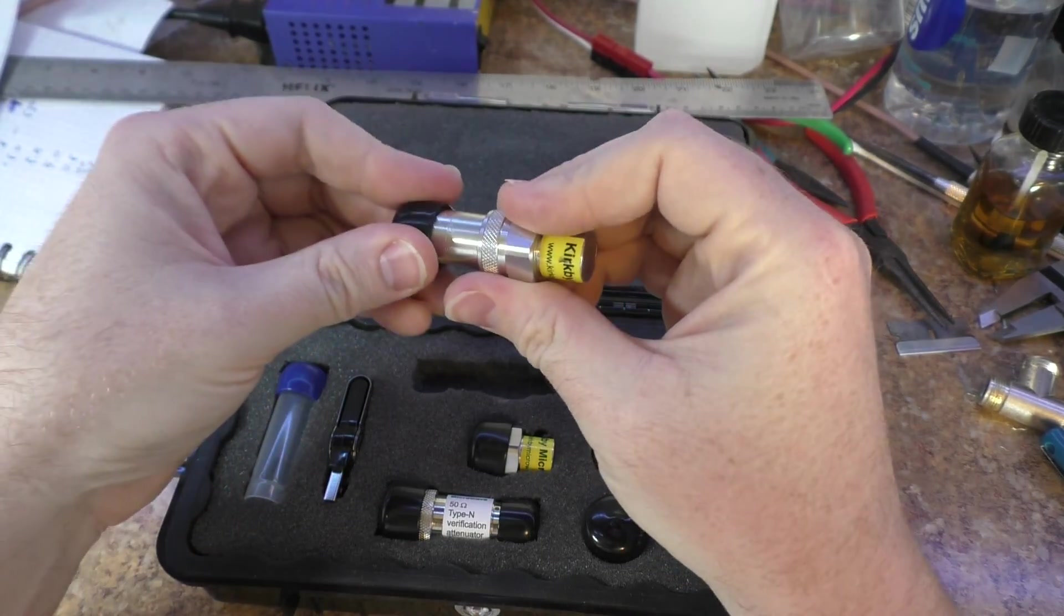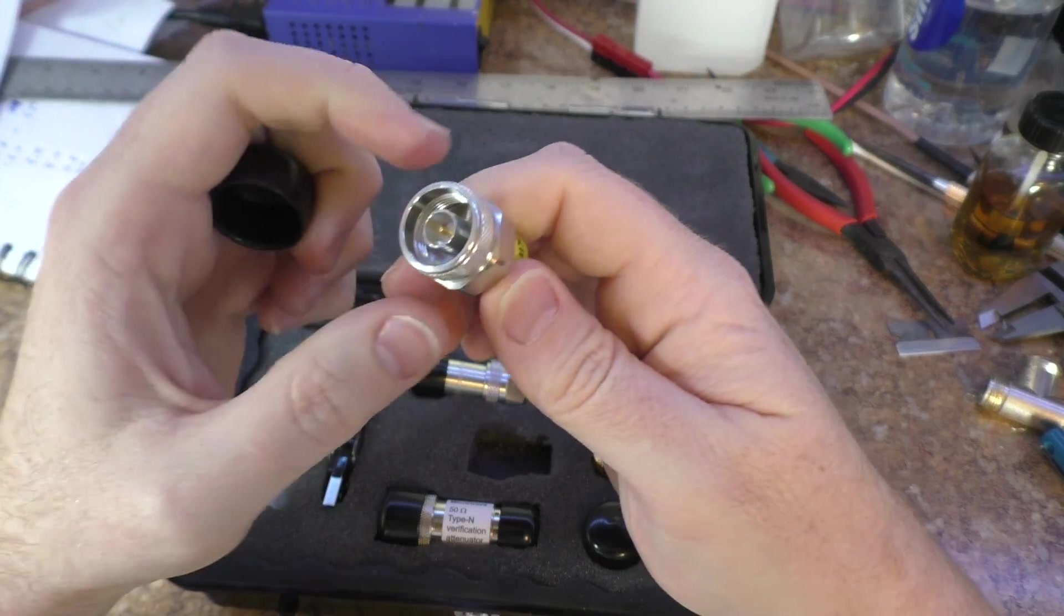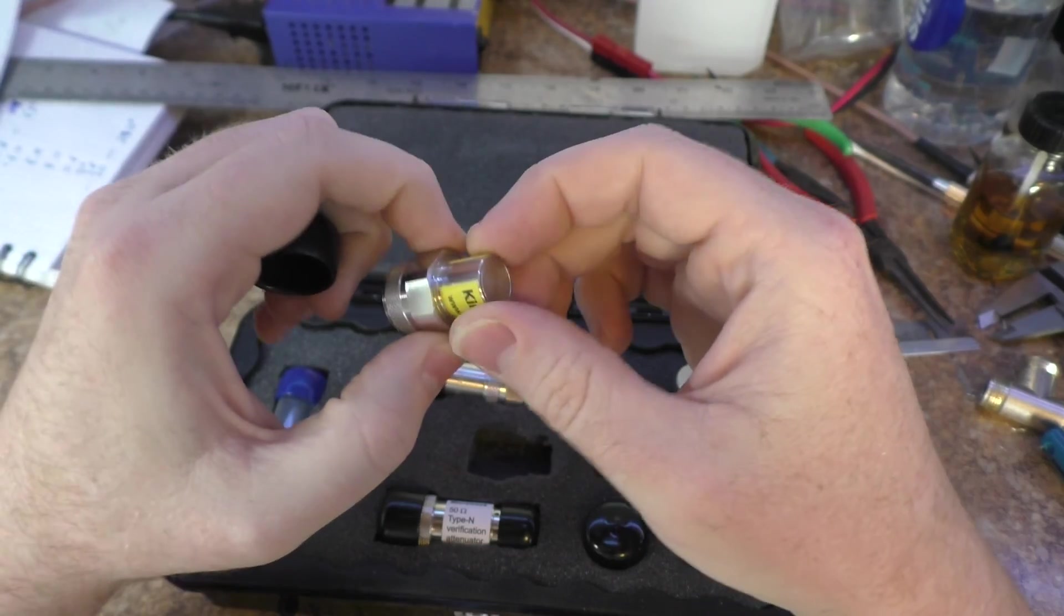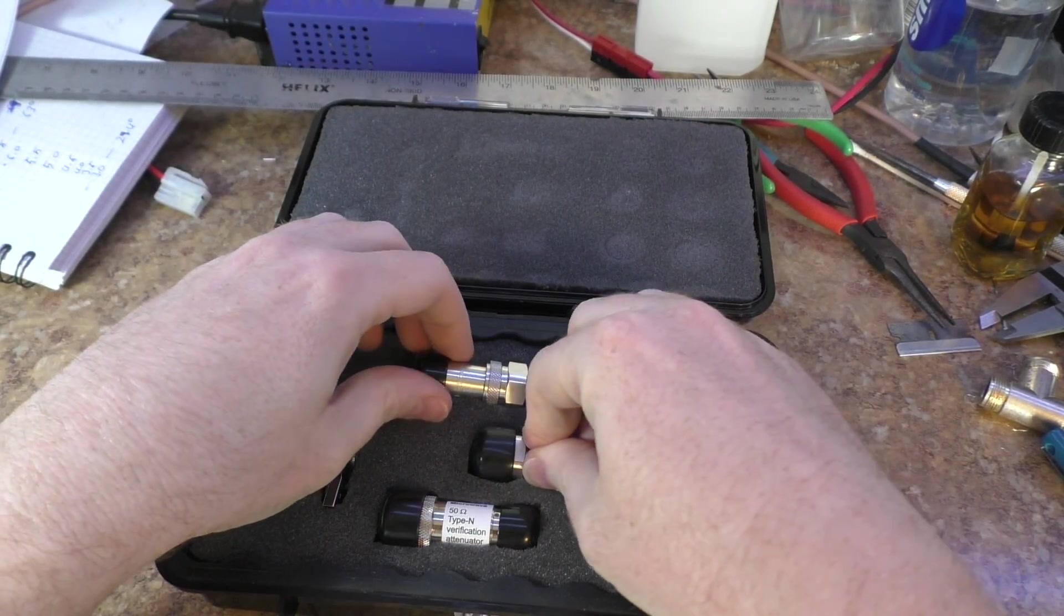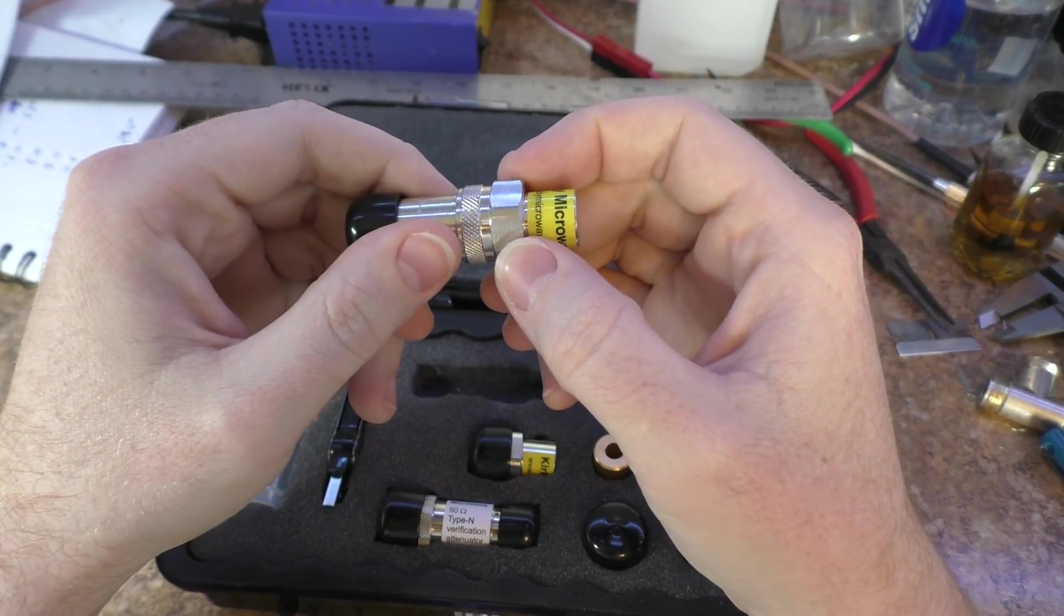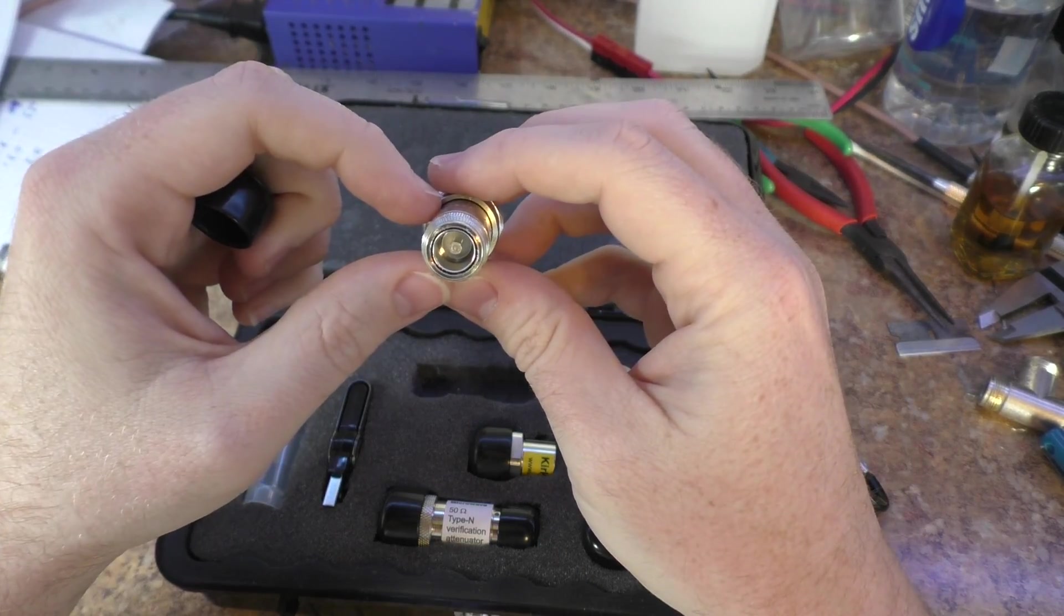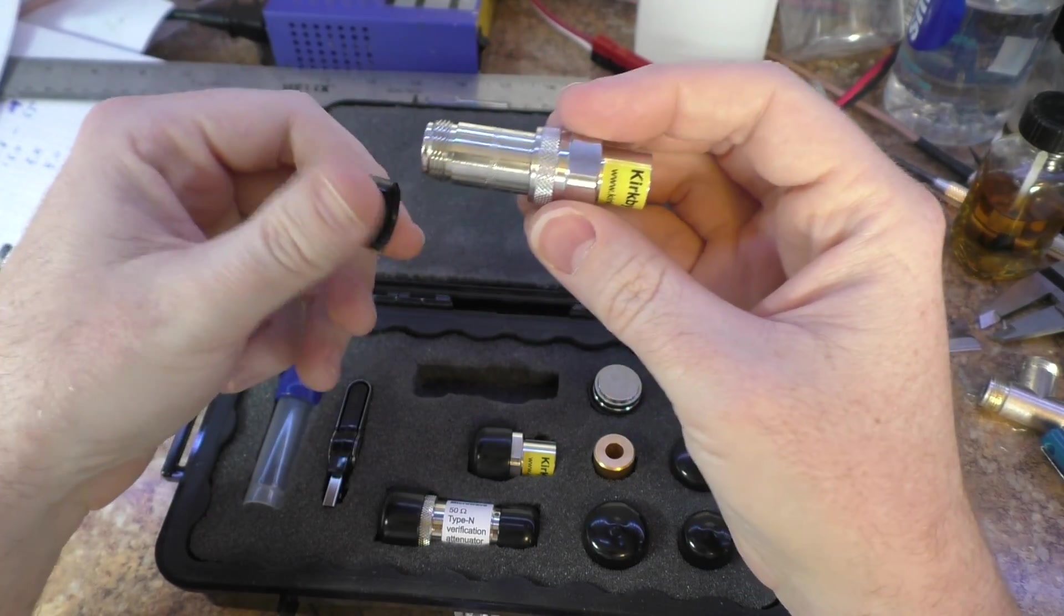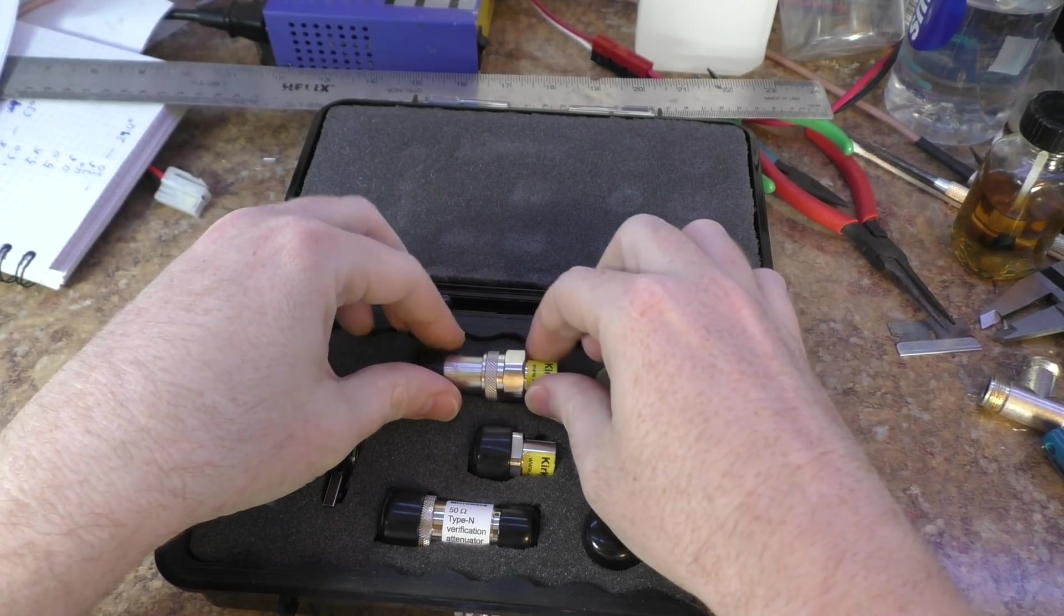And these are the loads, the six gig loads. Pretty standard load, looks pretty decent. And then I guess he only has the male loads that he has manufactured and he just uses an adapter on the male load to get you a female load, but it's calibrated so you have the data on it. And that's really the important thing about a calibration kit.